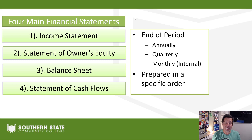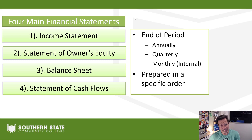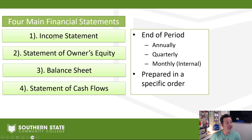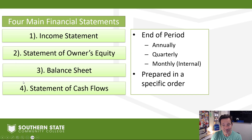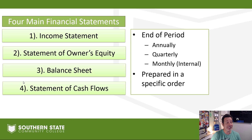These statements are going to be compiled at the end of the accounting period, whether it be annually or quarterly. Those are the required time periods for a publicly traded company that has stock on the market. But a lot of times they're also done monthly for internal purposes. We also have to prepare our financial statements in a very specific order - the income statement first, which allows us to prepare the statement of owner's equity, the balance sheet, and then finally the statement of cash flows.